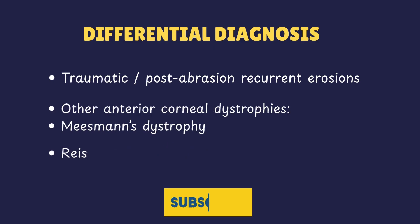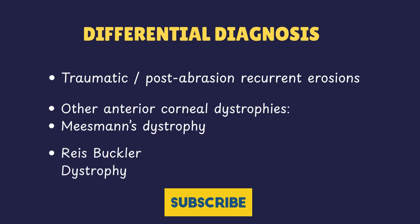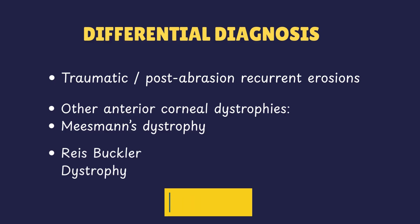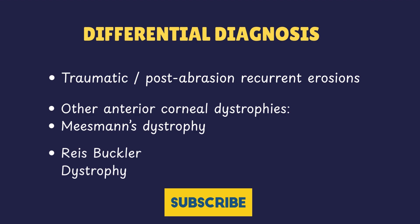We also have Reis-Bückler's dystrophy as a differential. It has an early onset and can also present with erosions. However, on the slit lamp you will see reticular or lattice-like subepithelial fibrosis — not the multilaminar basement membrane changes of EBMD. The classic MAP dot fingerprints will be absent here.